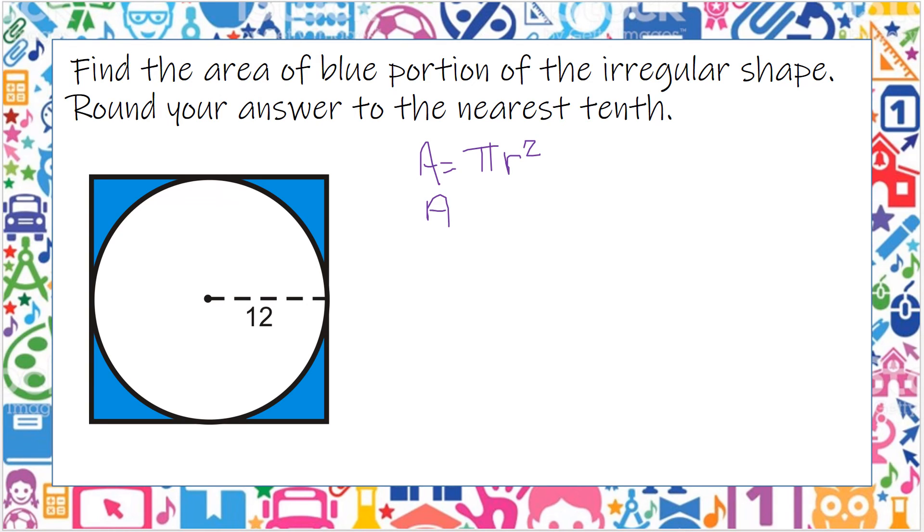Well, we have r, which is our radius, is 12, so I've got 3.14 times 12 times 12, and that gives us 452.16, and that is units squared.